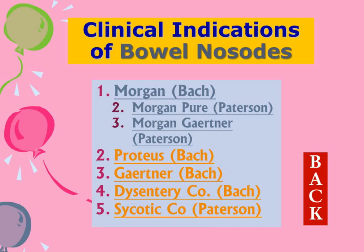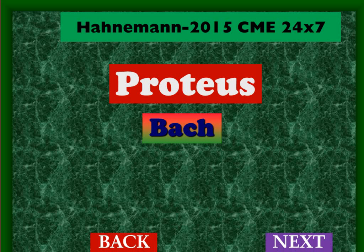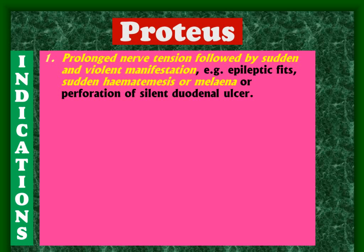After the Morgans we go to Proteus. It does not matter whether you write Bach or not as there is only one Proteus. Proteus is a storm: the keynote is prolonged nervous tension followed by sudden and violent manifestation. A person tolerates tension for weeks or months or years, and then suddenly there is a flare-up — of psychosis, affective disorder, epileptic fits, sudden haematemesis, blood vomiting, melaena, or perforation of a silent peptic ulcer. It can be organic or mental complaints.